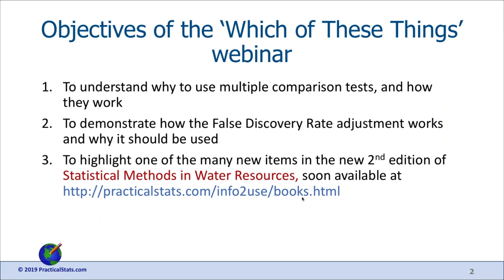This test is fairly new — new in a statistical sense, meaning it's been developed in the last 20 years. It takes a while for information from these kinds of developments to reach the environmental science community. That's one of the reasons for these webinars — to familiarize people with newer methods. Today we'll cover something called the false discovery rate, and it is recommended in the new second edition of Statistical Methods in Water Resources, not yet released by the USGS but coming soon.